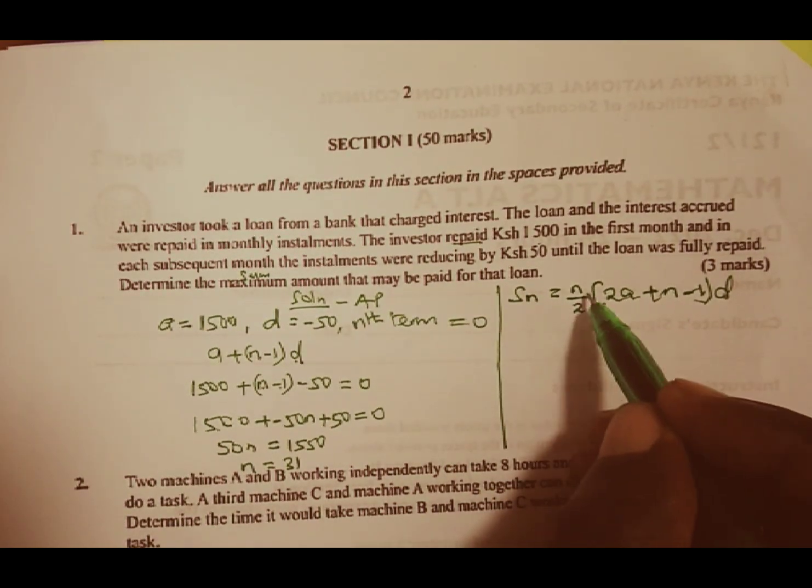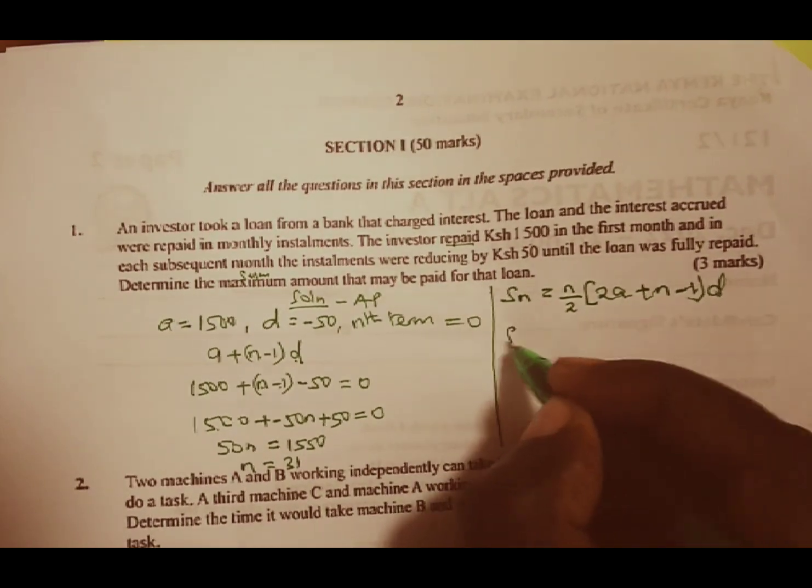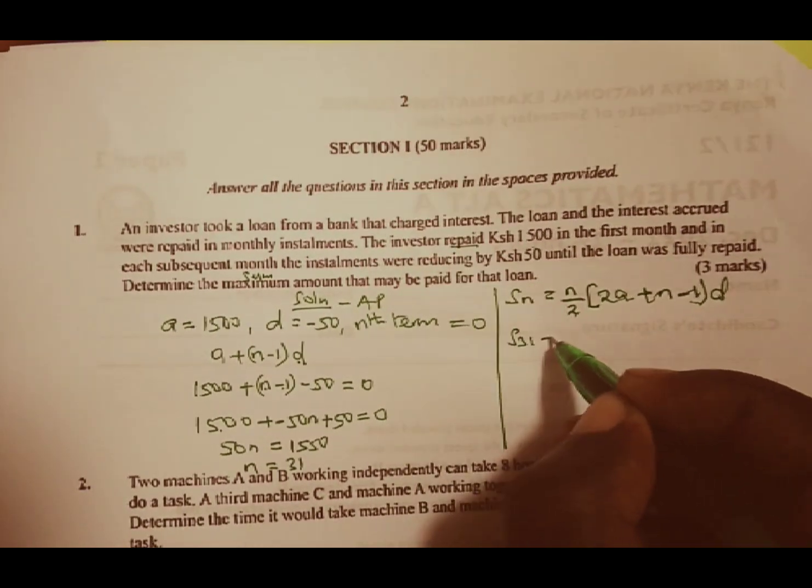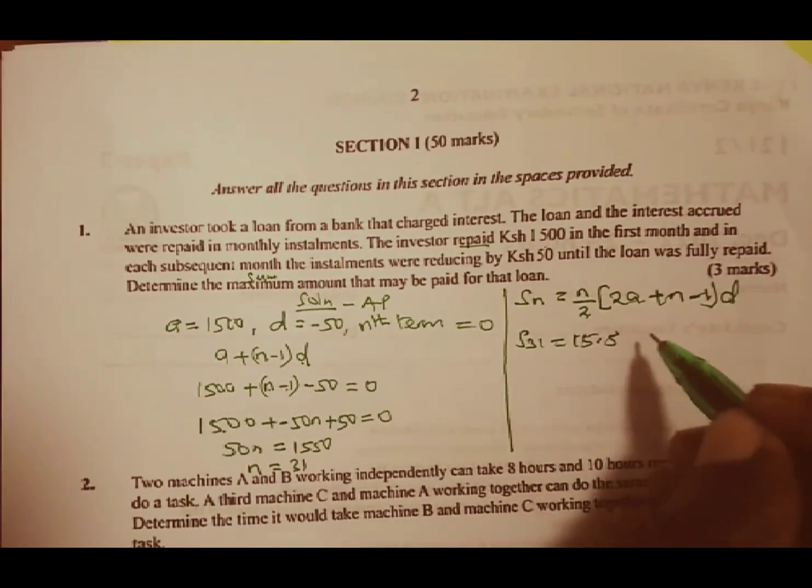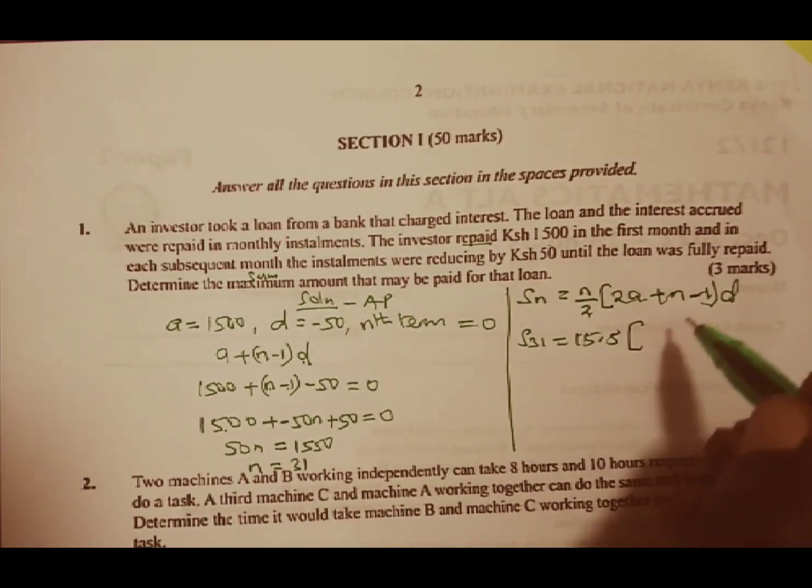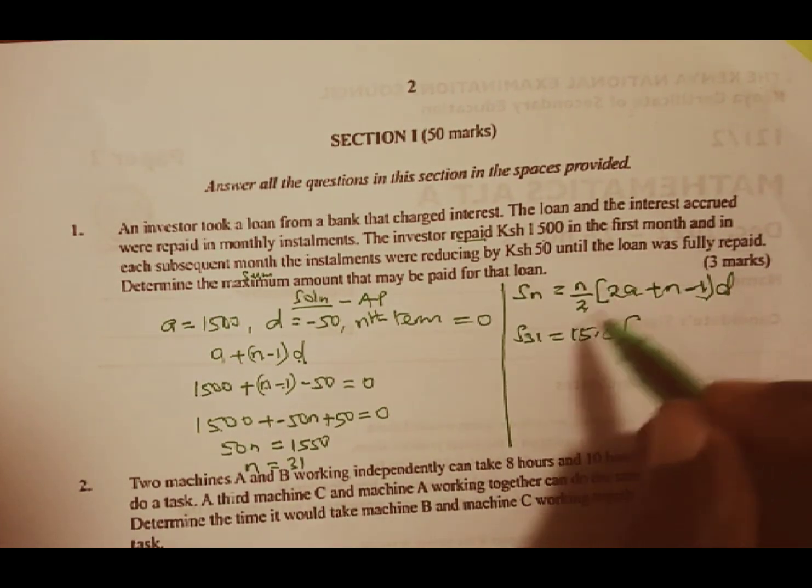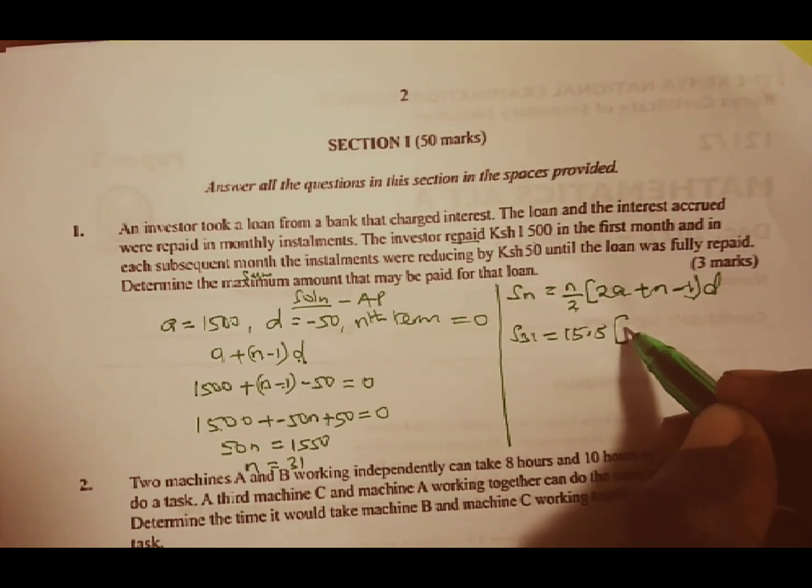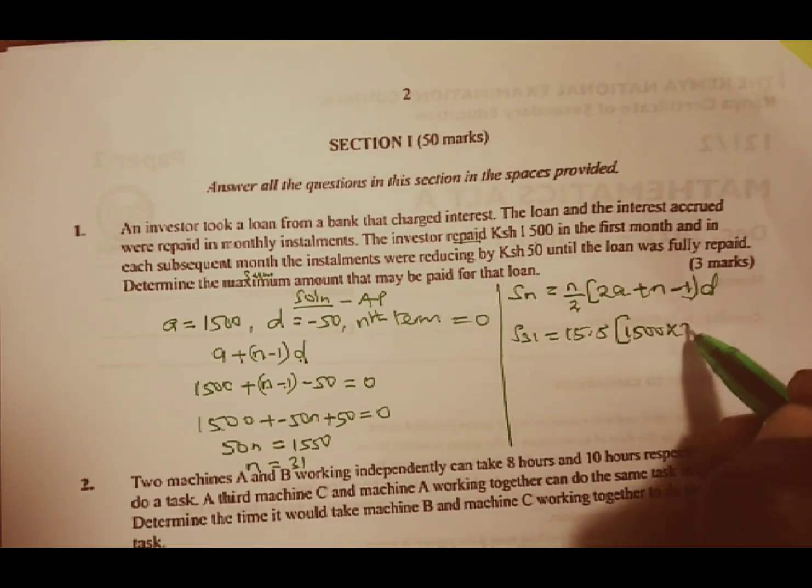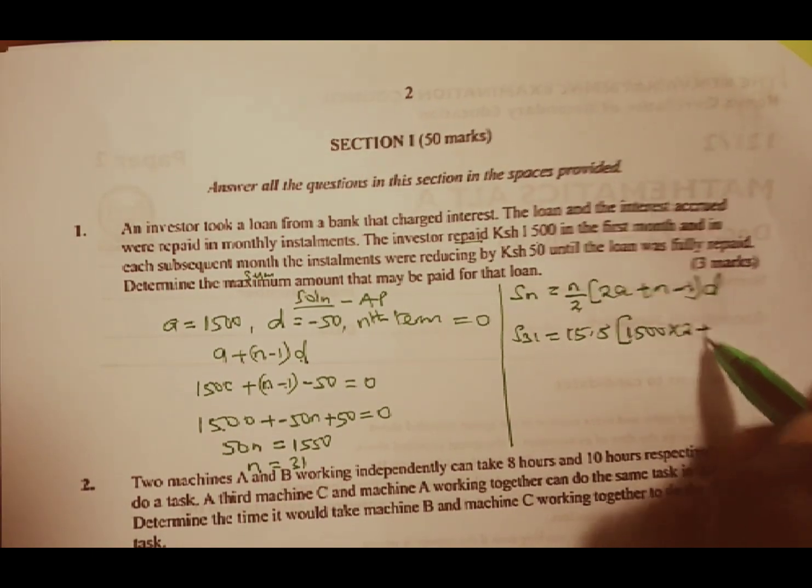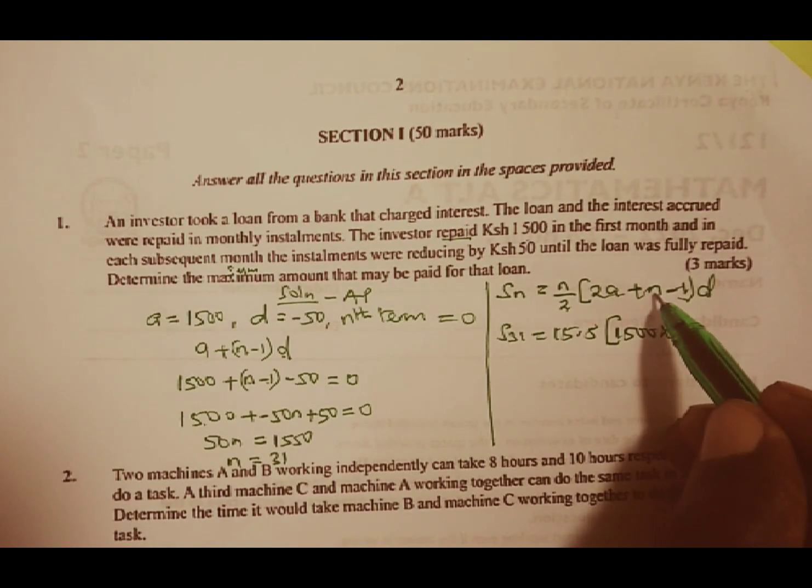We know we are getting the sum of 31 terms. And if you take that one, you divide by 2, you are going to get 15.5. We multiply by 2 times A, and our A is 1500.